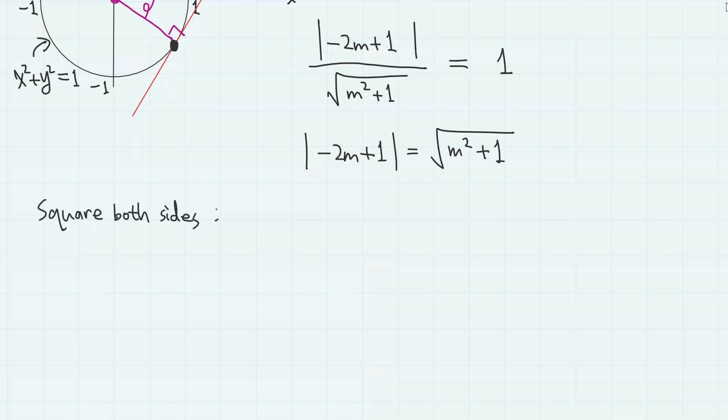This equation looks complex, but all we have to do is to square both sides. Then both the absolute value sign and the square root sign disappear. So we have 4m squared minus 4m plus 1 equals m squared plus 1.